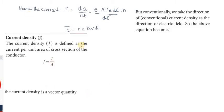The current density J is defined as the current per unit area of cross-section of the conductor. Current density equals current per unit area of cross-section.